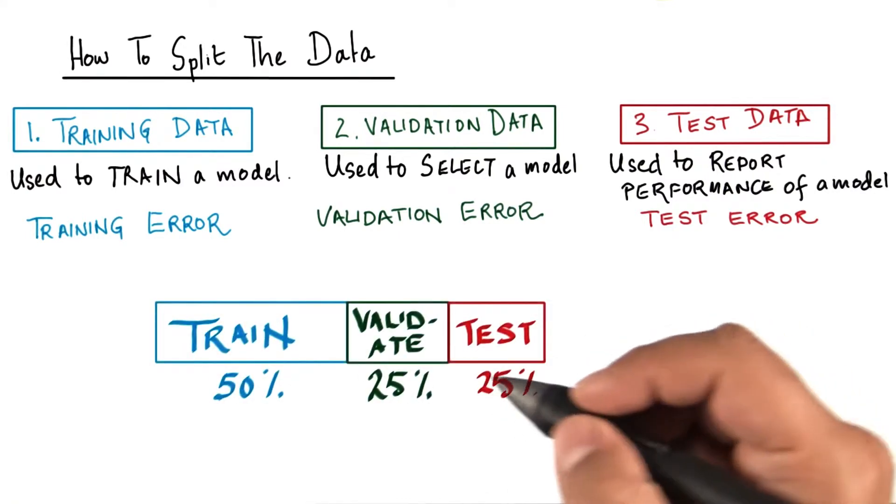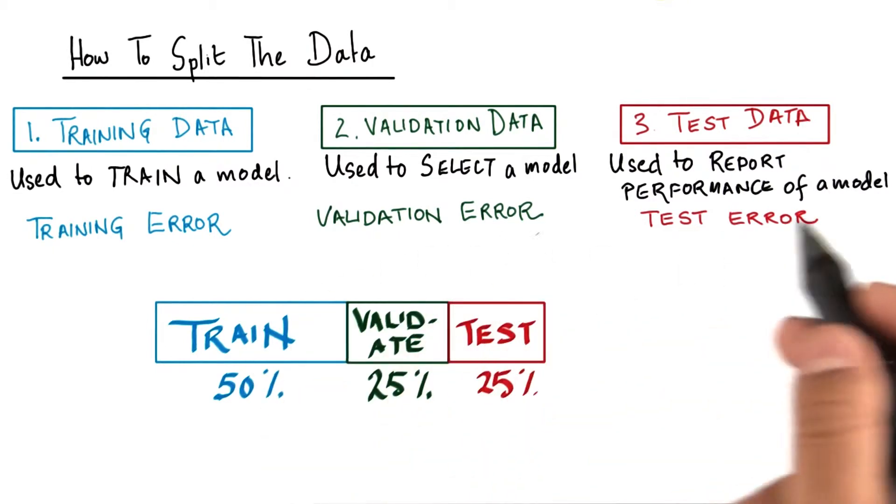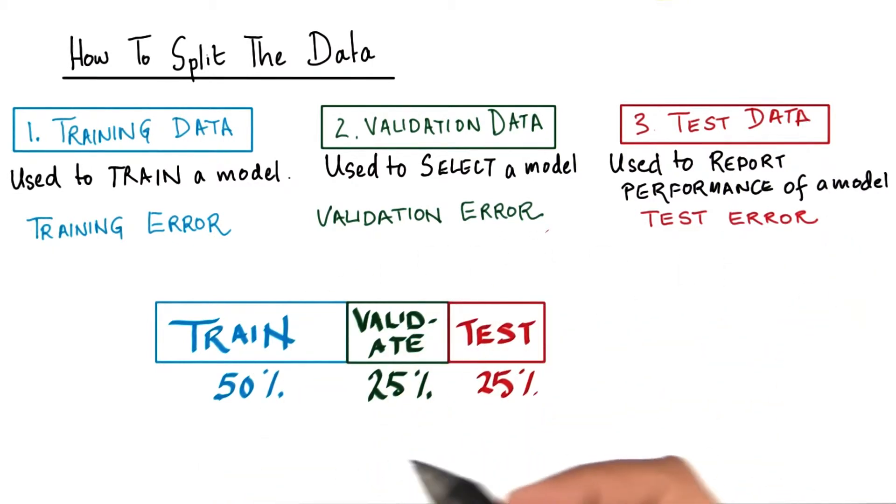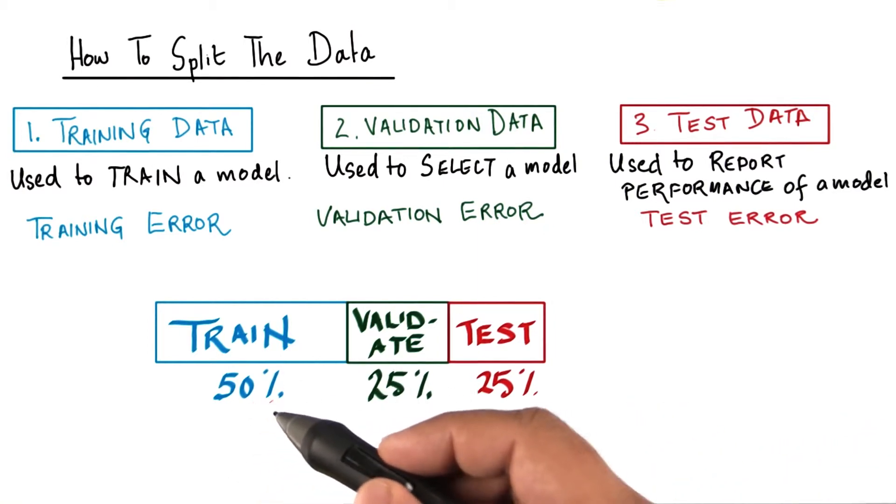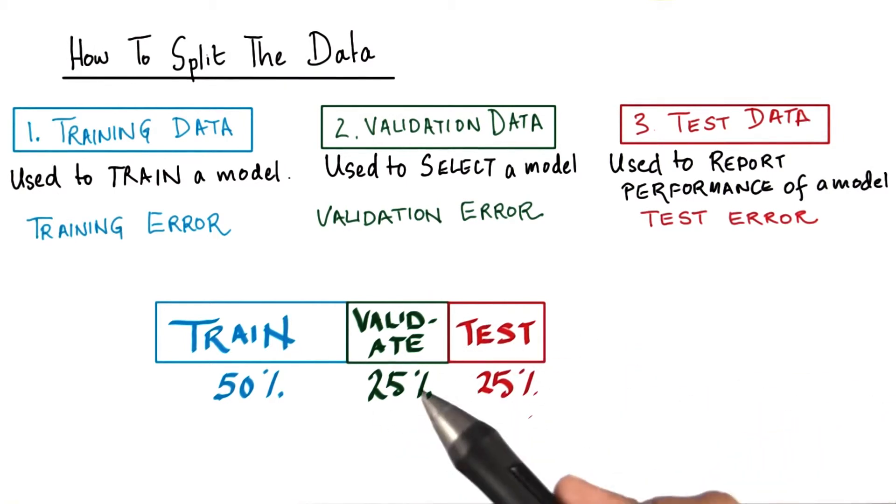There are no general rules how best one should split the data for each of the three purposes. Depending on the size or the volume of the data set, one will decide to split in proportion of 50 for training, 25 to validate, and 25 to test. Often, one might need more for training or validation.